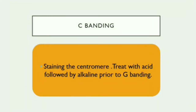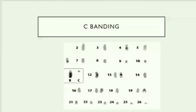The next type of banding is C-banding. From the word 'C' itself, we can understand it involves staining of the centromere. The centromere is stained by first treating it with an acid and then followed by an alkaline solution prior to the Giemsa staining. As you can see in the diagram, this technique clearly stains the centromere region.